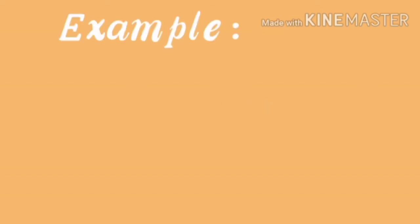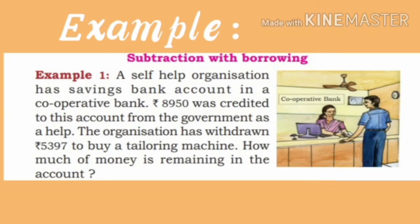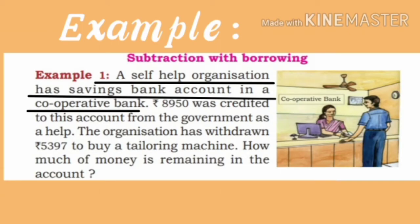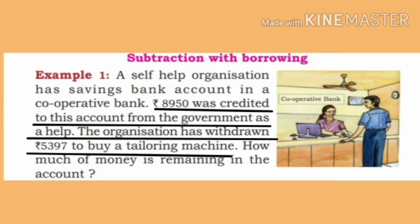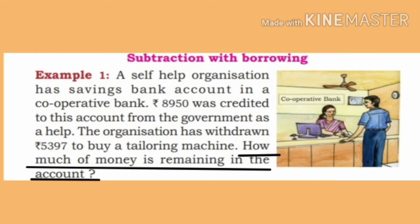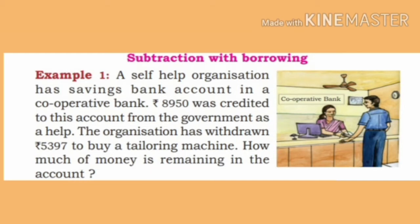Observe the example, children. A self-help organization has a savings bank account in a cooperative bank. Rupees 8,950 was credited to this account from the government as help. The organization has withdrawn rupees 5,397 to buy a tailoring machine. How much money is remaining in the account?